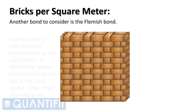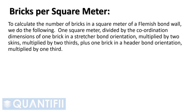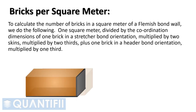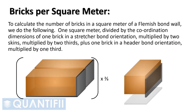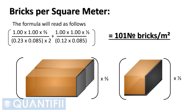Another bond to consider is Flemish bond, which is different from English bond as the wall consists of alternating header and stretcher bricks laid in the same course rather than alternating per course. The formula is: {[1 × 2/3 ÷ (0.23 × 0.085) × 2] + [1 × 1/3 ÷ (0.12 × 0.085)]} = 100.88 bricks, which we can round up to 101 bricks per square meter.